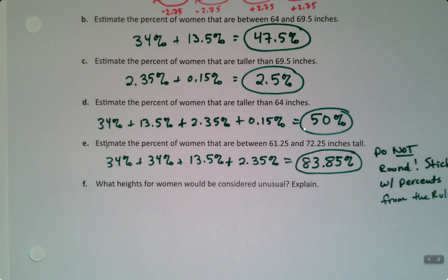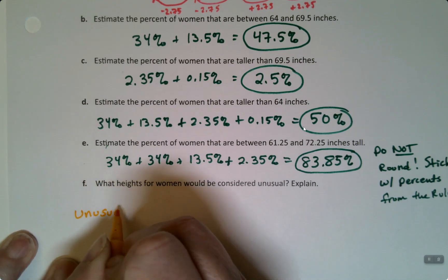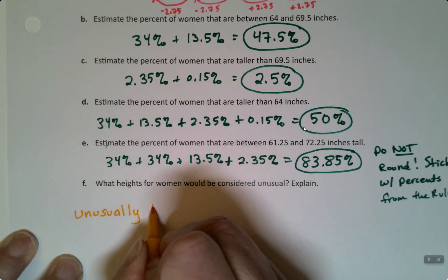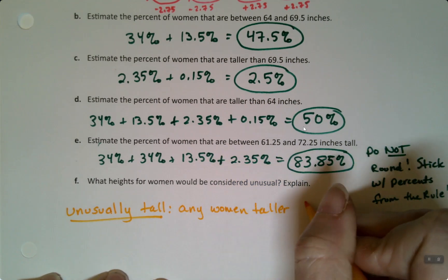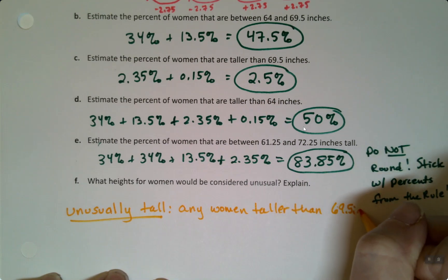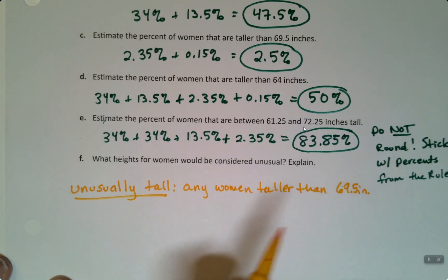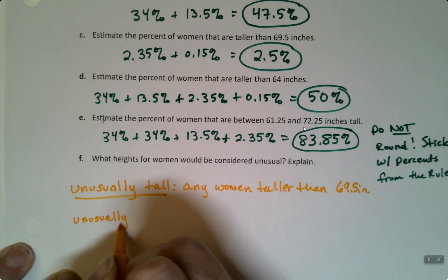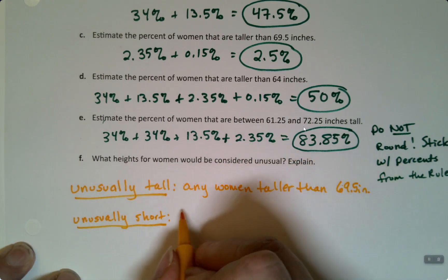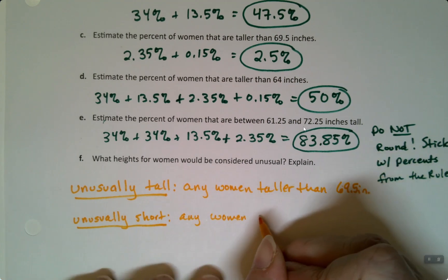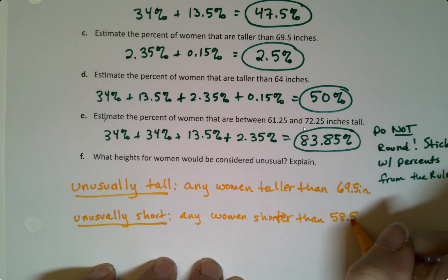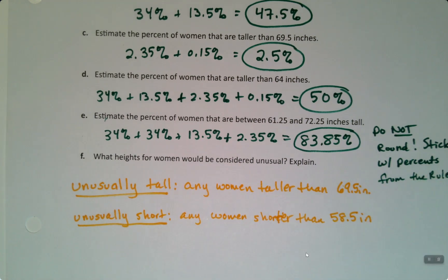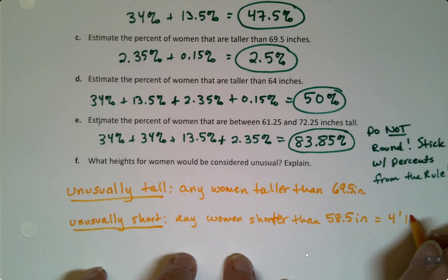So it's asking us what heights for women would be considered unusual. Well, I just did it. Unusually tall women would be any women taller than 69.5 inches. So if you're taller than five foot nine and a half, you are an unusually tall woman, which is true. This is real data. And unusually short women would be any women shorter than 58.5 inches, which is about four feet ten and a half, four feet ten point five inches. And this one, just in case you want to know, is five feet nine point five inches.